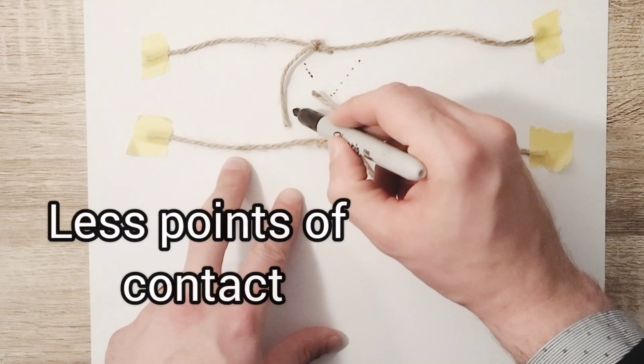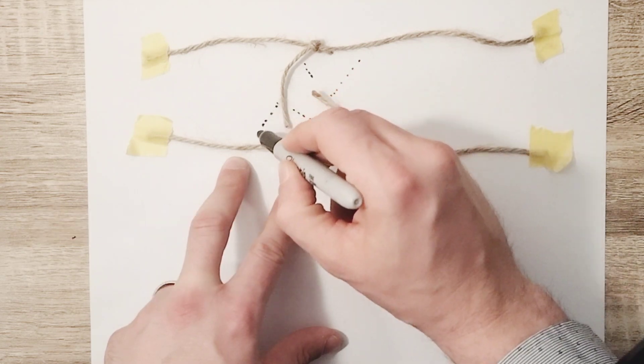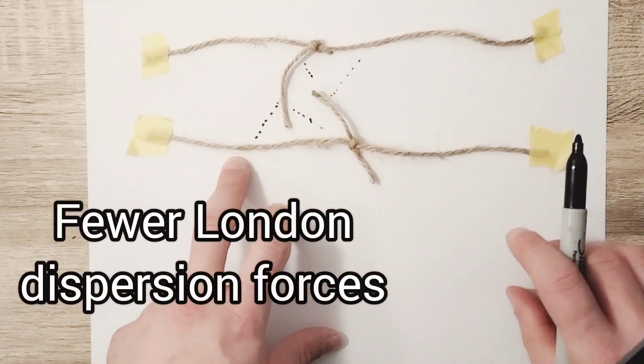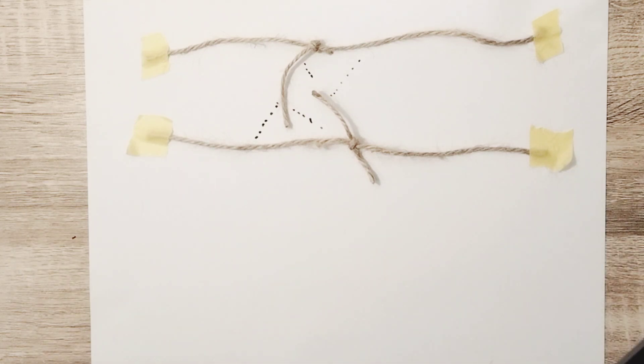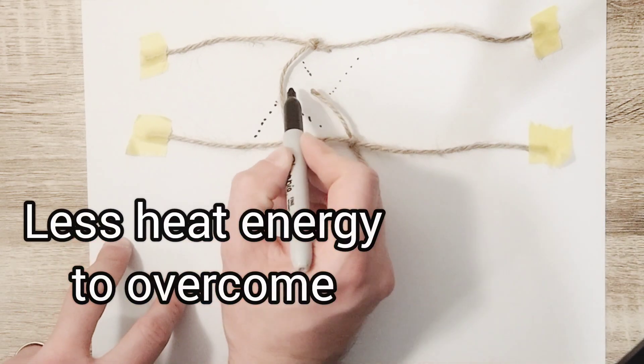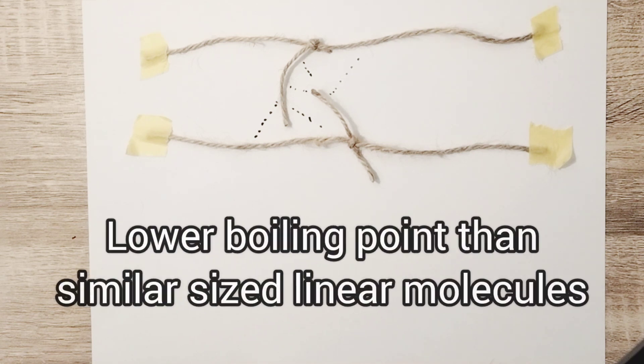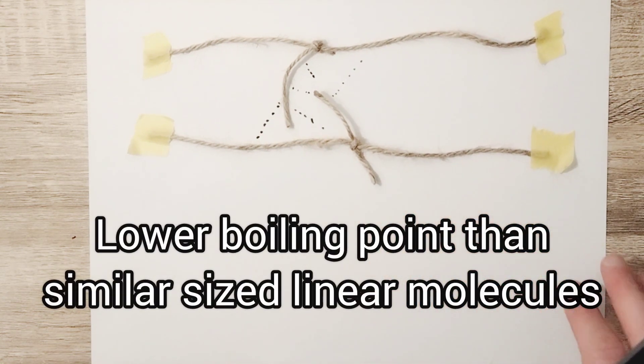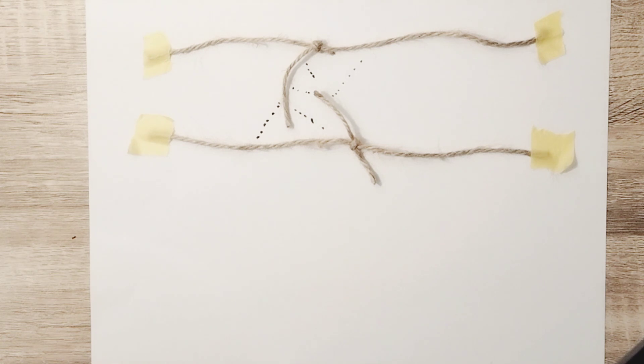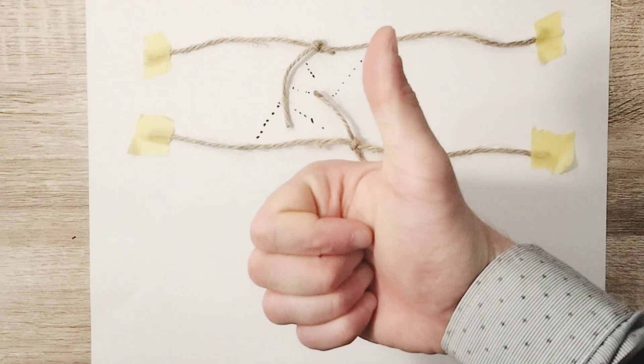That produces fewer points of contact along these chains and therefore fewer London dispersion forces will be able to form. These will require less heat energy to be overcome and therefore the branched chain molecules will have a lower boiling point than corresponding similar sized long-chain linear molecules. I really hope this model helps with your understanding of London forces.